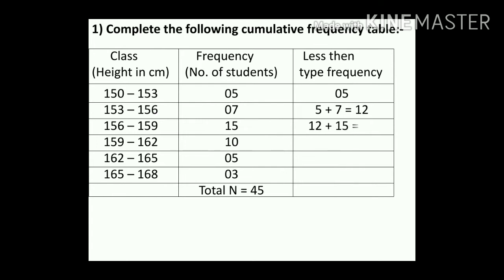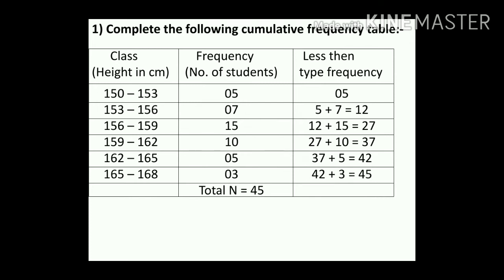We carry 12 to the next line and add 15: 12 + 15 = 27. Then 27 + 10 = 37, then 37 + 5 = 42, then 42 + 3 = 45. The final cumulative value is 45, which matches the total frequency of 45 — so the answer is correct.